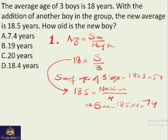So the difference is the age of the new boy. The difference, 74 minus 54, is 20 years. This means the new boy must be 20 years old.